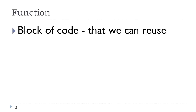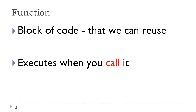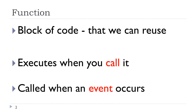A function is a block of code that we can reuse. It is executed when you call it somewhere in your code. This function is called when an event occurs — event meaning some user action.